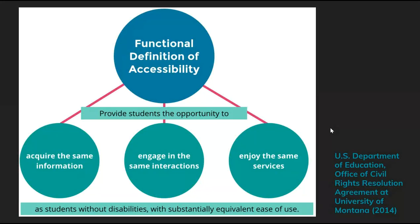Accessibility is really all about our ability to engage with, use, participate in, and belong to the world around us. With respect to web accessibility, accessible means that one can access websites with or without assistive technology, such as a screen reader. The image on the screen provides a more legalistic definition: students with disabilities are entitled to the same opportunities as their non-disabled peers.